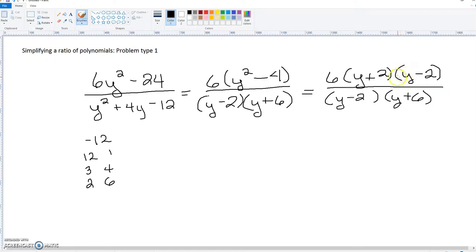We've got up here, we've got this y minus 2, and we've got a y minus 2 on bottom. So both of those cancel out.